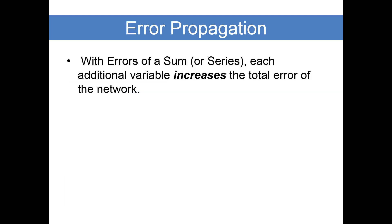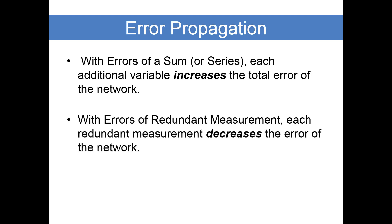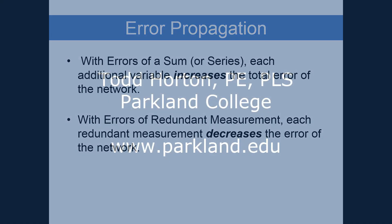To summarize, with errors of a sum or errors of series, each additional error source increases the total error of your network or system. However, when you have errors of redundant measurement, each redundant measure decreases the error in your network or system. This will become especially valuable as you get into least squares adjustments and is the key for achieving good network precision.